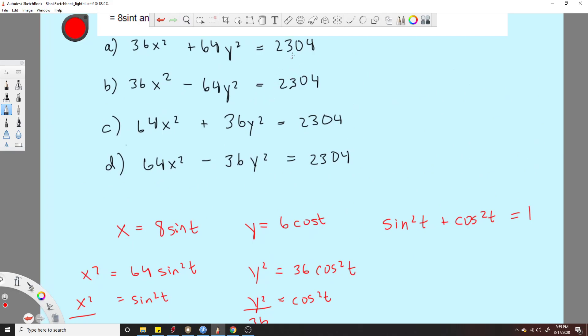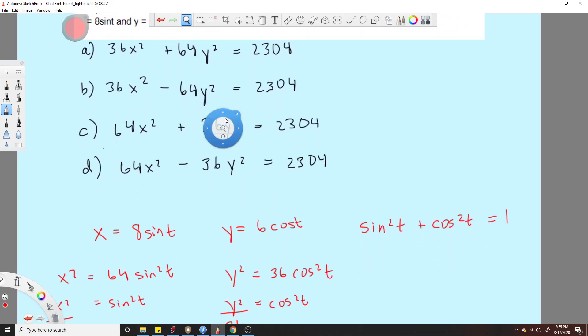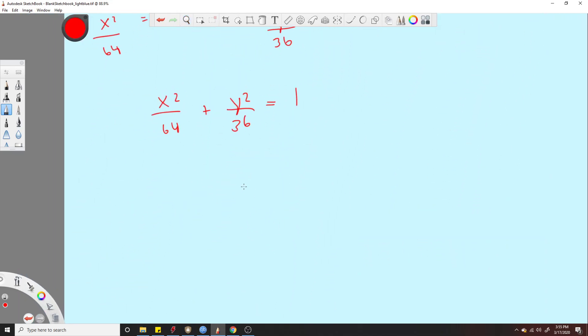But now we need, well, it looks like this 1 turns into a 2,304. So let's just multiply it by 2,304 and see what happens. Turns out that that 2,304 is a common denominator of 64 and 36. So this will turn into, I'll just write it like this. Plus 2,304, y squared over 36 equals 2,304. Just multiply every single term by 2,304. So this will be 36x squared plus 64y squared equals 2,304.